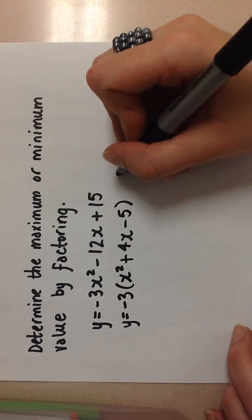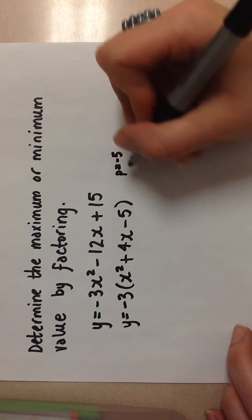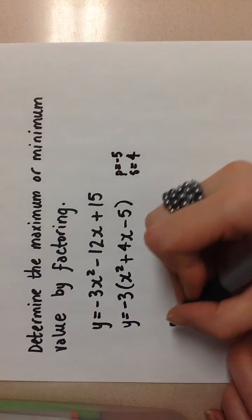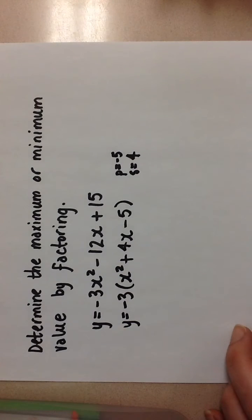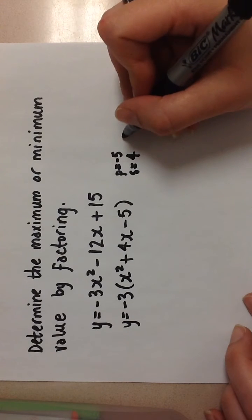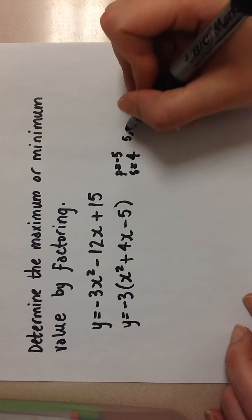For that simple trinomial I see that my product is negative 5 and my sum is 4. So my two numbers then are going to be 5 and negative 1.